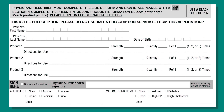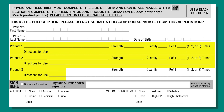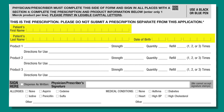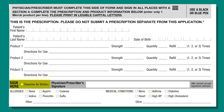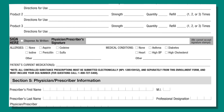There is room in this section for your health care provider to request up to three Merck medications. Make sure your health care provider fills out the patient's name, date of birth, and the allergies and medical conditions information. Your health care provider needs to sign and date the form — we cannot accept the form without a signature. We also cannot accept a signature stamp.